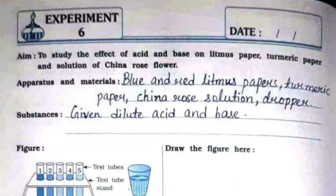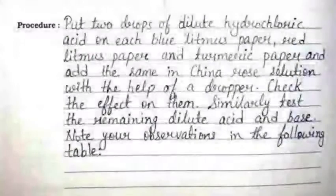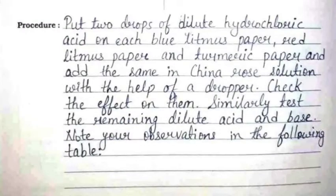solution and dropper. The substances to be used are given dilute acid and base. Now you need to draw the same figure on the right hand side. The procedure is: put two drops of dilute hydrochloric acid on